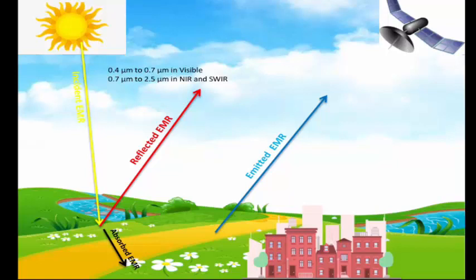Emitted electromagnetic radiation mostly lies in the 3 micrometer to 16 micrometer region of the infrared spectrum. In the night, when the sun is not there, various objects like land, sea, and water which have been heated by the sun's temperature emit electromagnetic radiation mostly in the IR region. These emitted electromagnetic radiations can be captured by a sensor. Events like fire in a jungle, supernova, or volcano can also emit electromagnetic radiation in the IR region that can be captured by the sensor.